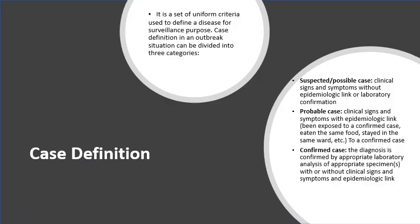Case definition refers to criteria used to define a disease for surveillance purposes, especially in outbreak situations. Patients can be classified according to the strength of symptoms and certainty of diagnosis. Suspected cases have clinical signs and symptoms without an epidemiological link or laboratory confirmation. For example, the patient has suspected signs and symptoms of the disease but no exposure history or laboratory confirmation.